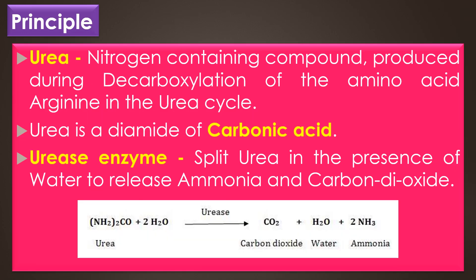Urea is a nitrogen-containing compound that is produced during the decarboxylation of the amino acid arginine in the urea cycle. Urea is a diamide of carbonic acid. Many organisms like Proteus mirabilis, Proteus vulgaris, Klebsiella pneumoniae, and Helicobacter pylori — especially those that infect the urinary tract — have the urease enzyme, which is able to split urea in the presence of water to release ammonia and carbon dioxide.